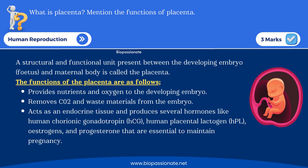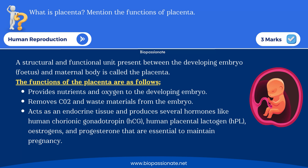Now let's understand important questions from the chapter Human Reproduction. This chapter is very important not only for your board exam but also for KCET and NEET. Here is a question for three marks: what is placenta — mention the functions of placenta. The definition: placenta is the structure present between the fetus and the mother's body. Functions: it provides nutrients and oxygen to the developing embryo, removes carbon dioxide and waste materials, and acts as an endocrine gland. Remember the hormones produced by the placenta.